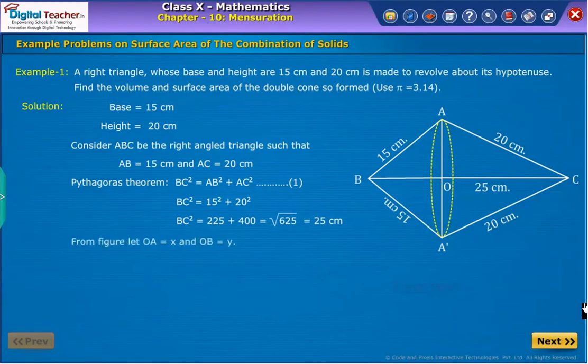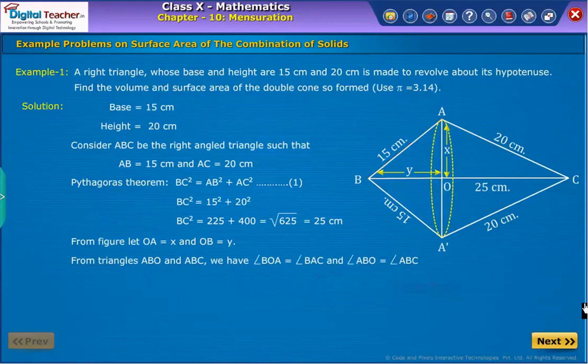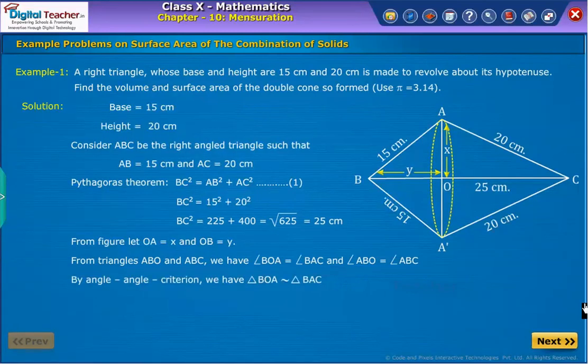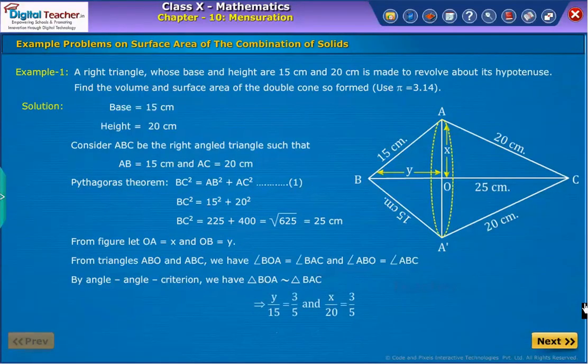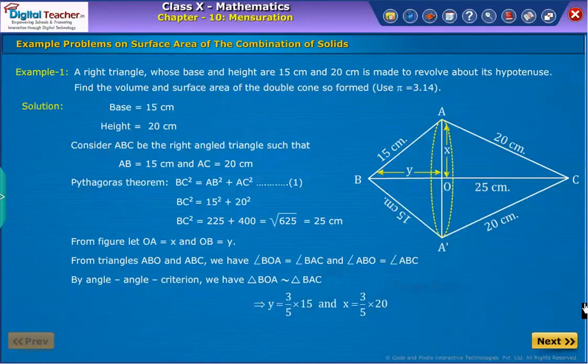Now, let us assume OA equals X and OB equals Y. In triangles ABO and ABC, we have angle BOA equals angle BAC and angle ABO equals angle ABC. By angle-angle similarity, we say that triangle BOA is similar to triangle BAC. Therefore, we obtain as shown. By substituting the values of BO, BA, OA, AC, BA and BC, we obtain as shown. Thus, X equals 12, which is further equal to OA, and Y equals 9, which in turn equals OB.